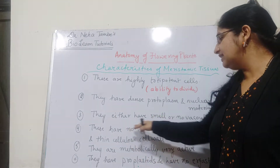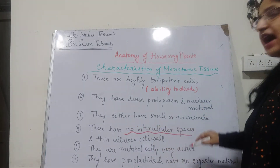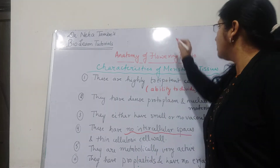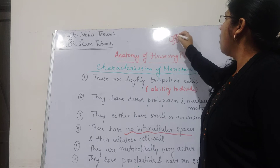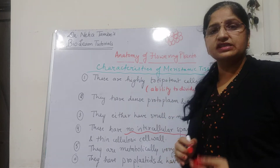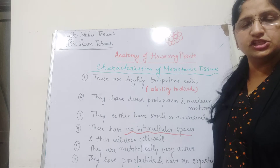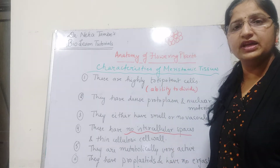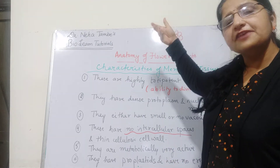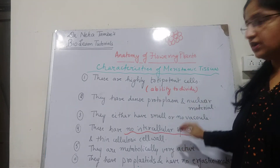These are small size cells with no intracellular spaces. Yeh sare cells isodiametric size ke hote hain, sabhi cells ek saman hote hain, aur yeh cells kaafi compactly packed hote hain. Inme intracellular spaces nahi hote. Inme kuch communication ke liye kuch protoplasmic bridges bhi nahi hote. Plasmodesmata connections bhi itne zyada strong nahi hote. Because inka kaam sirf aur sirf divide karna hai. So they do not have intracellular spaces.